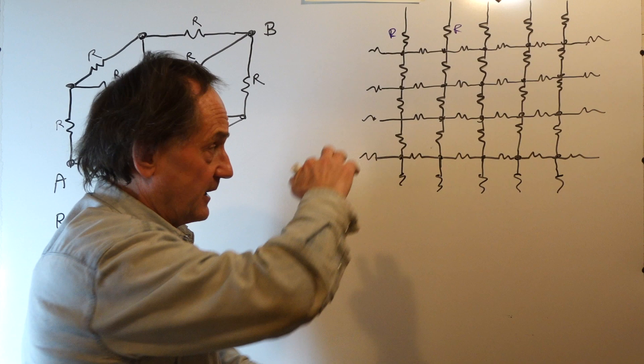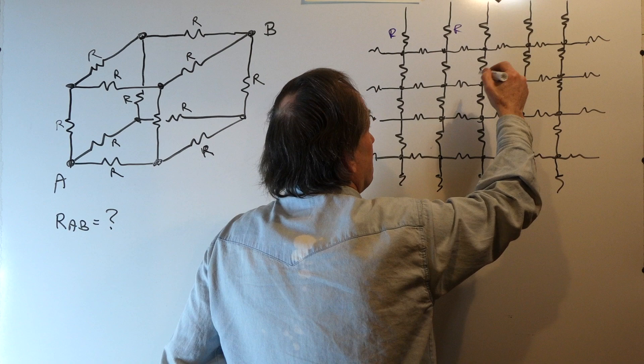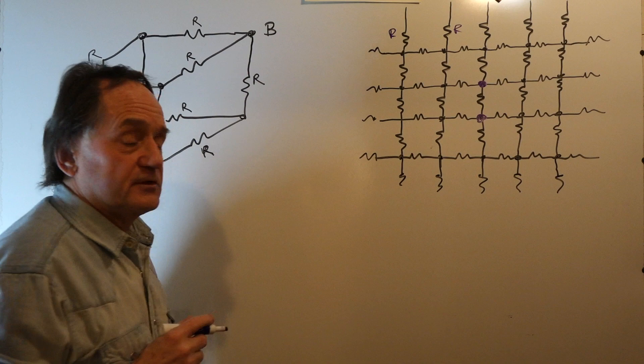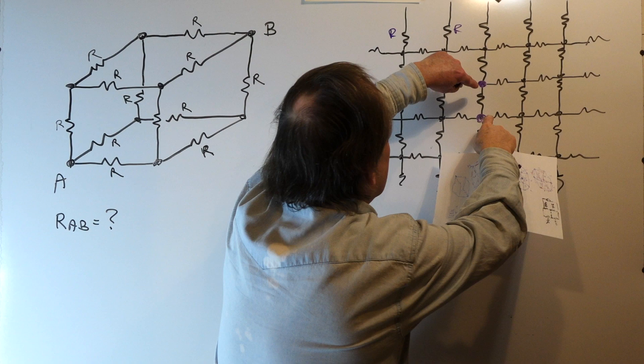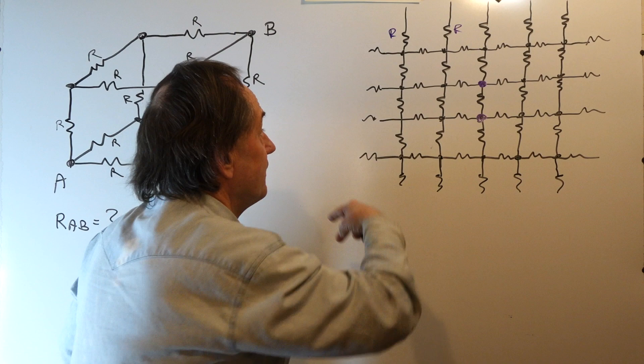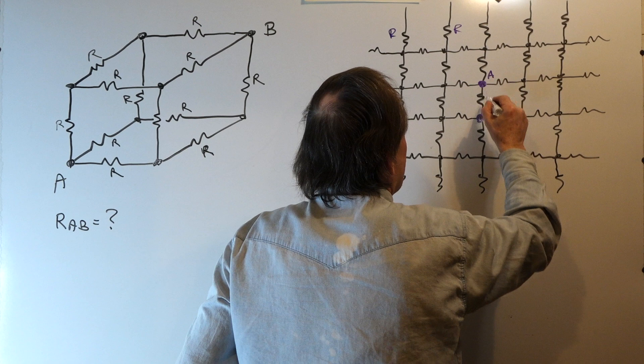The question is, what is the equivalent resistance between any two adjacent nodes across the resistor? Looking into the network, if I were to take an ohmmeter and connect it between these two points, what am I going to measure for the total resistance? Between nodes A and B, what is the resistance?